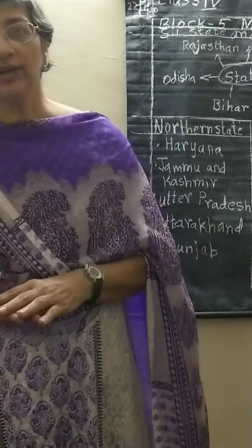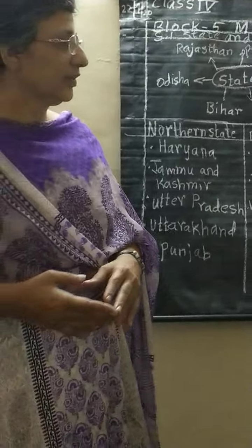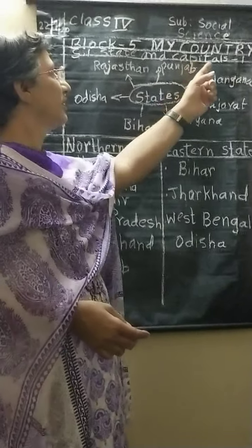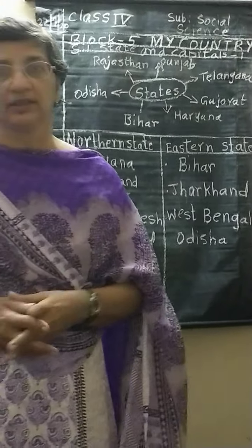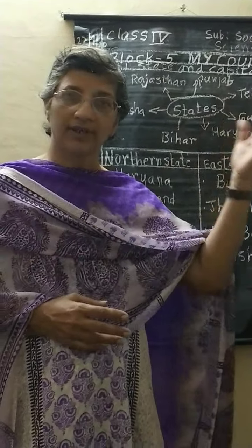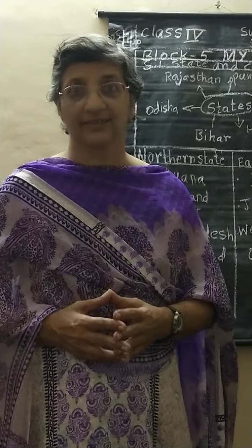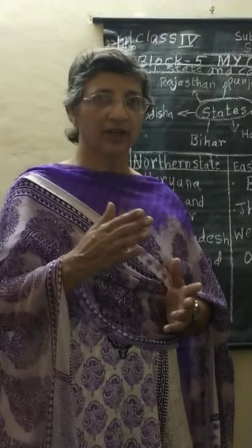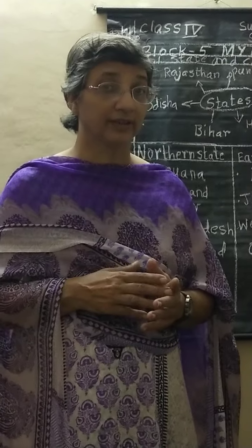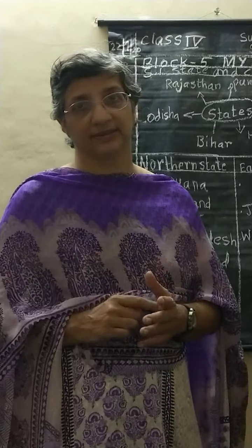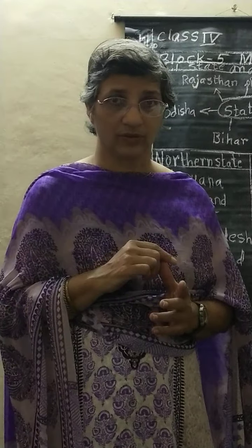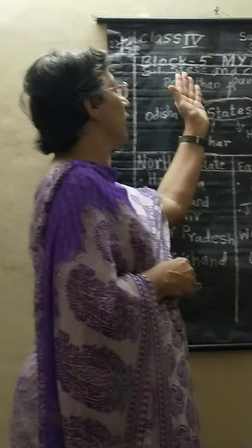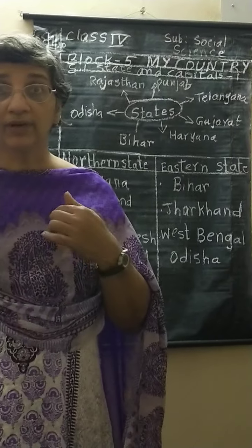Children, hope you are all fine. Now children, we will be going to start a new lesson, Block 5, My Country. Previously, in 3rd class, you have already learnt about our state — that is Andhra Pradesh and Telangana — and you learnt the boundaries and the neighbor states. Now today we will be going to start a new block, My Country. This is about our country, that is India.